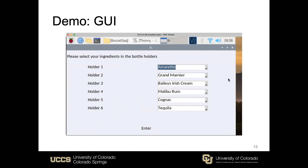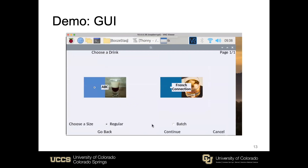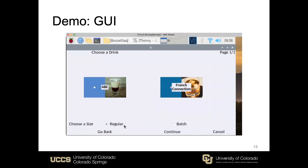Selecting enter, we have two options: ABC or French Connection. I'm going to make a French Connection. We have two size options — regular and batch — so I'm going to make a batch this time. We can still go back to change the bottles or cancel and return to the home page.